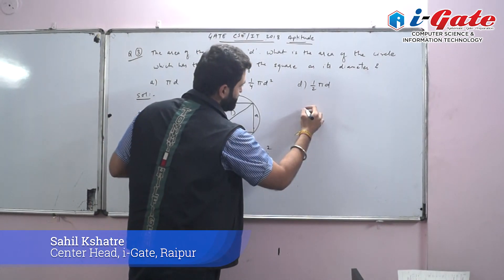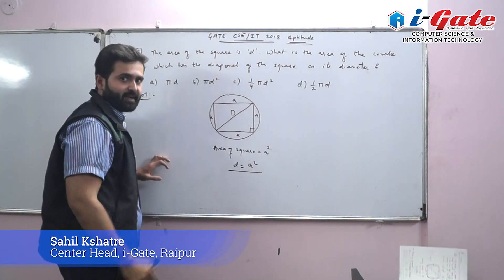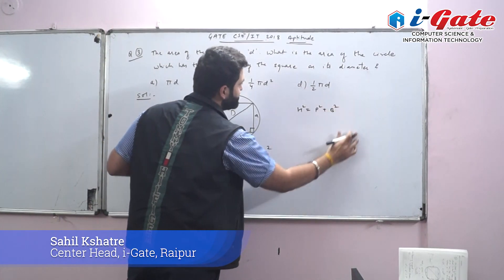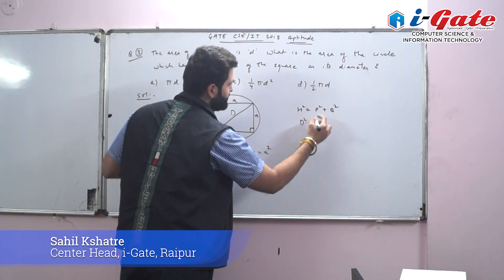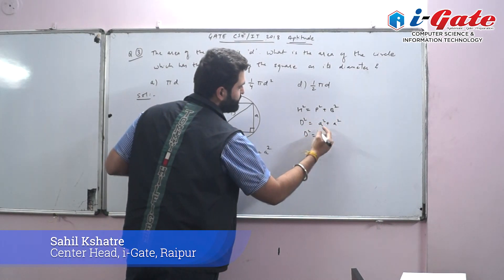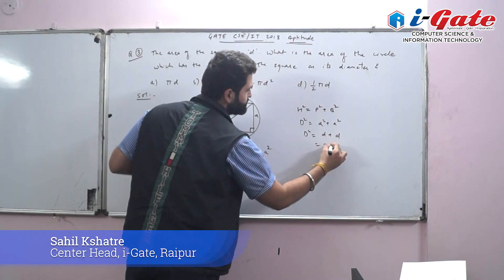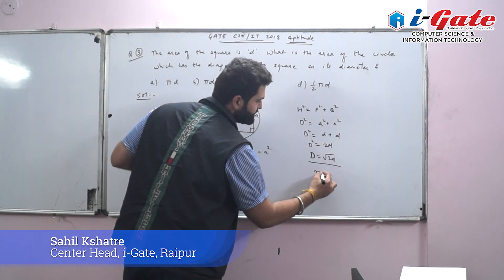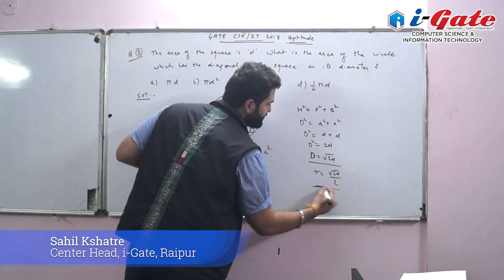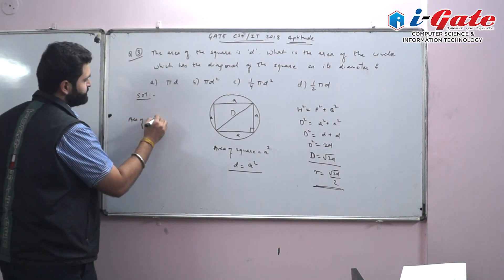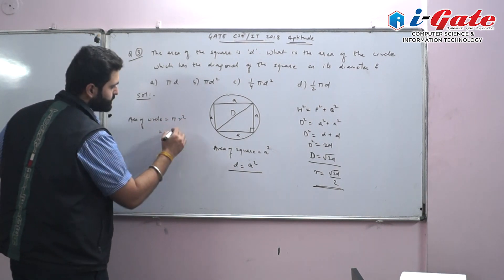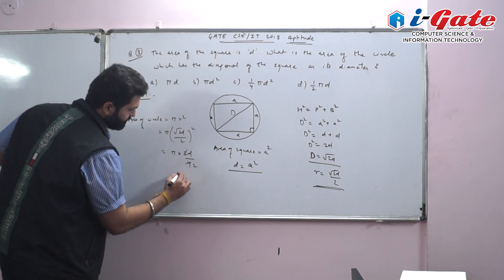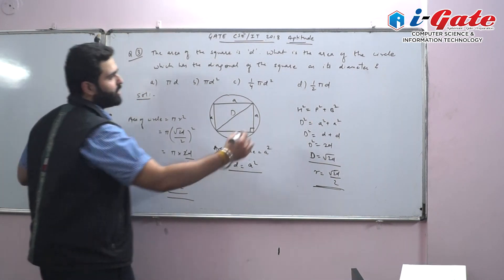Using the Pythagorean theorem on the square's diagonal: D² = a² + a² = 2a² = 2d, so D = √(2d). The radius r = √(2d)/2. Area of circle = πr² = π × (2d/4) = πd/2. Option D is correct.